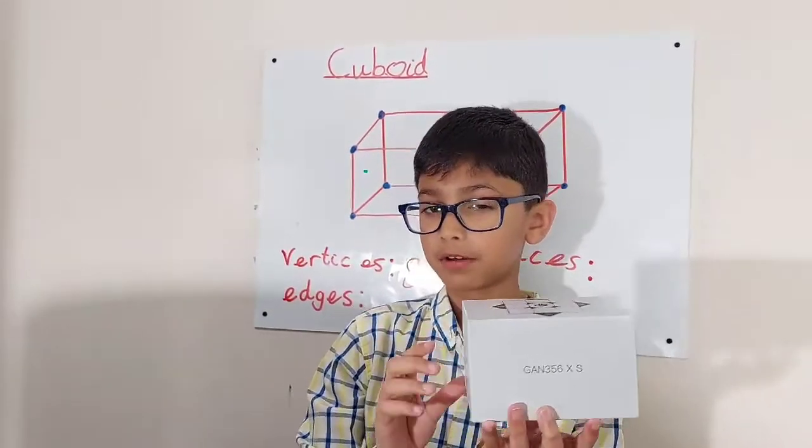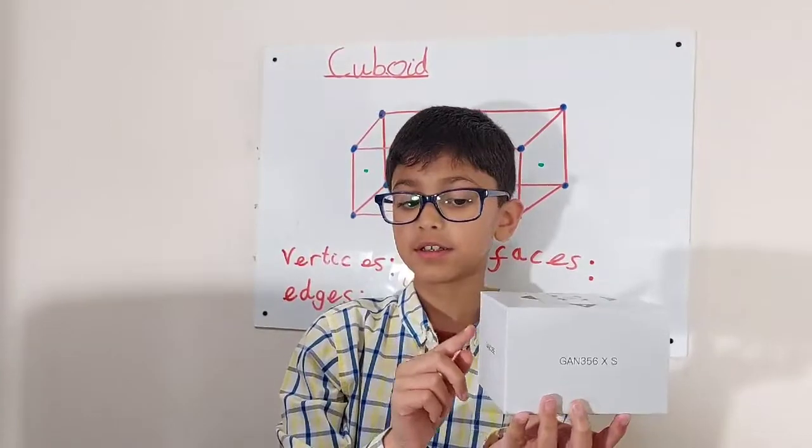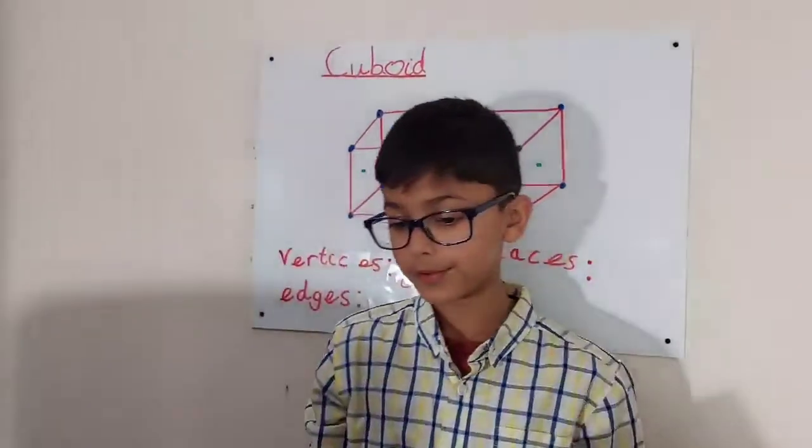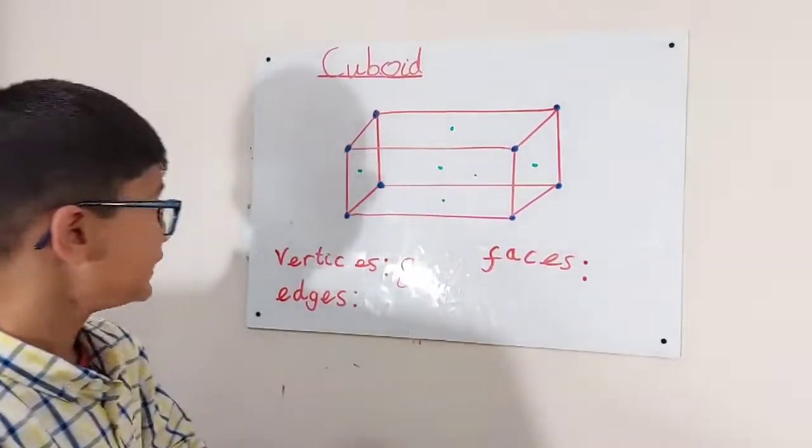But we haven't got eight, we've still got the sides. Nine, ten, eleven and twelve. So there are twelve edges.